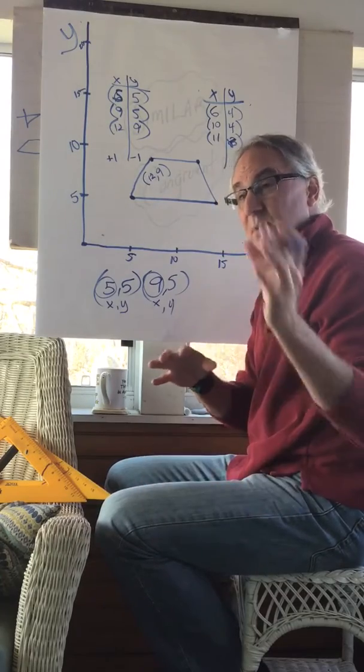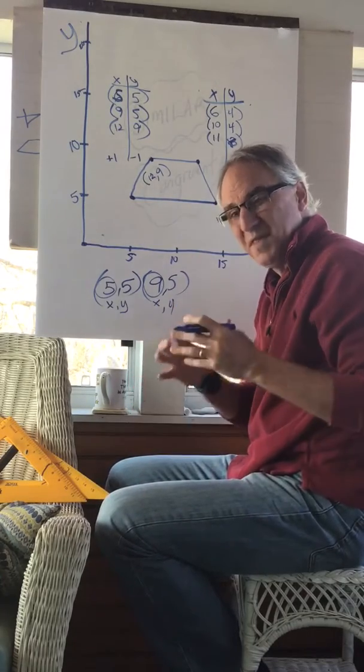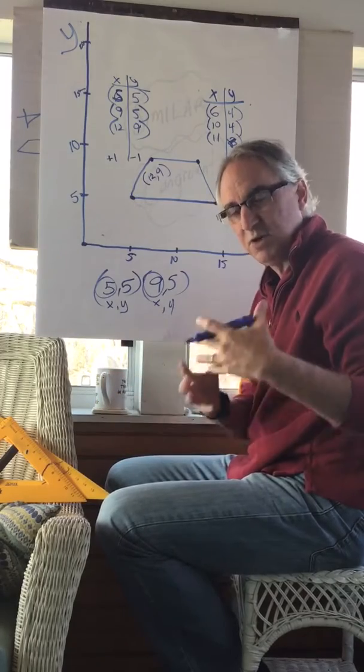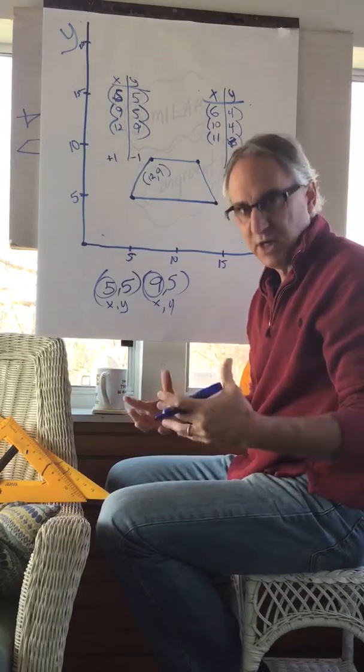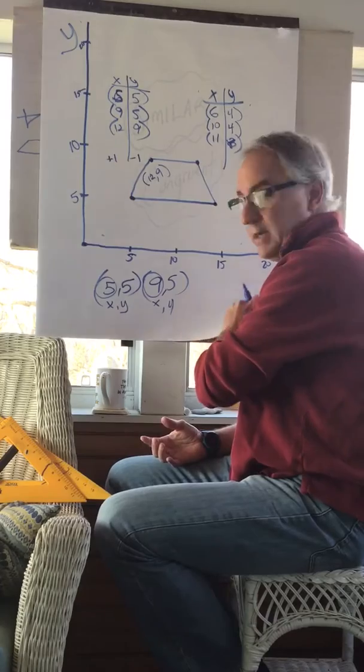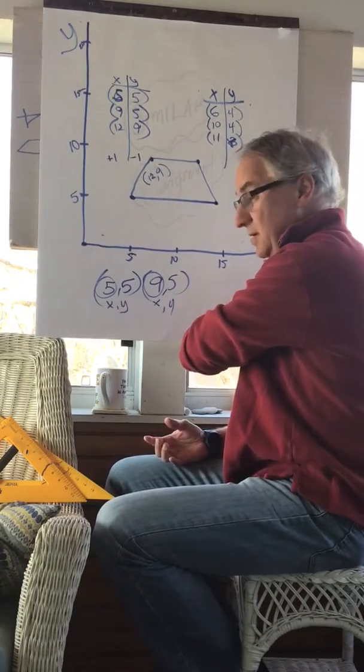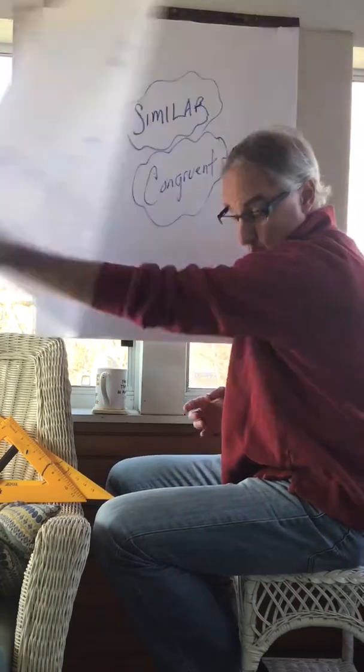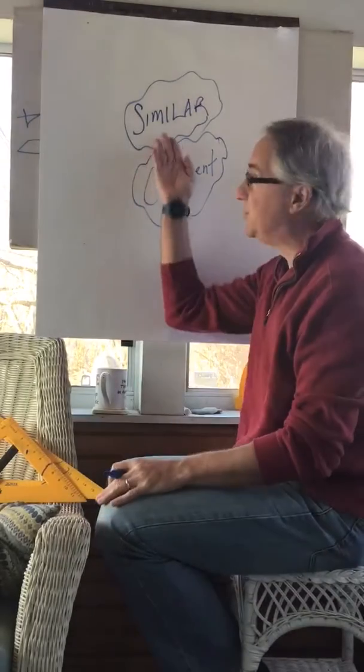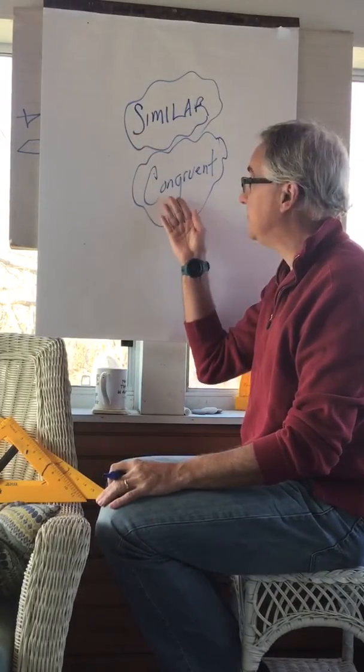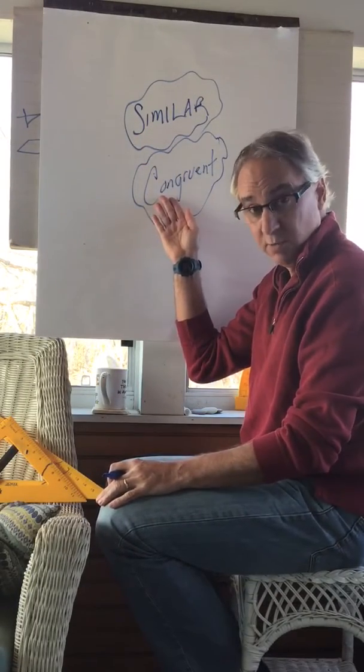And it's a little bit different because then we're going to start talking about what that new figure is, because there are types of figures in geometry. There are types of figures, it's just like being in class, that are called similar and there are types of figures that are called congruent.